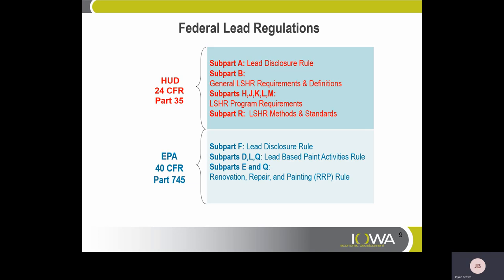The federal lead regulations are two-fold. HUD's 24 CFR Part 35: Subpart A is the lead disclosure rule; Subpart B is the general lead-safe housing rule requirements and definitions; Subparts H, J, K, L, M cover the lead-safe housing rule program requirements; and Subpart R covers the methods and standards. EPA's 40 CFR Part 75 also has a lead disclosure rule in Subpart F; Subparts D, L, and Q cover the lead-based paint activities rule; and Subparts E and Q cover the renovation, repair, and painting rule, also known as RRP.